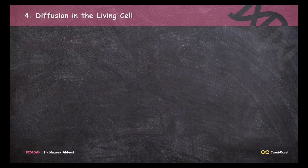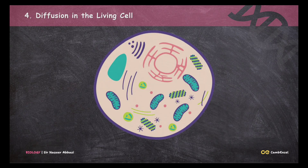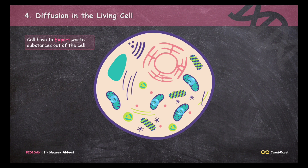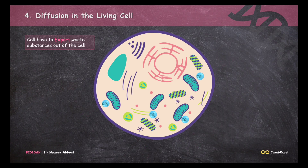Similarly, cells also have to export a lot of waste material. During normal metabolic activity, a cell produces a lot of metabolic waste which is not good for the cell. For example, as you can see in this picture, there are many mitochondria. When a cell respires aerobically, these mitochondria produce carbon dioxide, which is a waste gas. So the cell simply exports this carbon dioxide out through diffusion. This is how the cell maintains its normal homeostatic conditions.